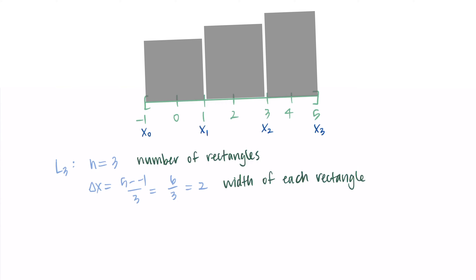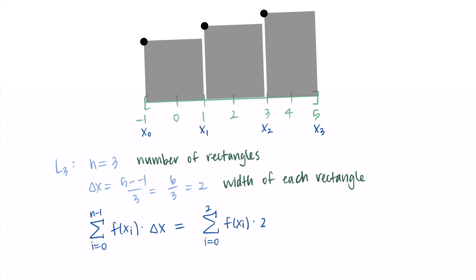Now I'll set up my Riemann sum. For a left sum we use the left endpoint on each rectangle, so I'm going to use x₀, x₁, and x₂. The formula for the left Riemann sum is the sum from i = 0 to n-1 of f(xᵢ) · Δx. Filling in our specifics: sum from i = 0 to 2 of f(xᵢ), multiplied by Δx = 2.